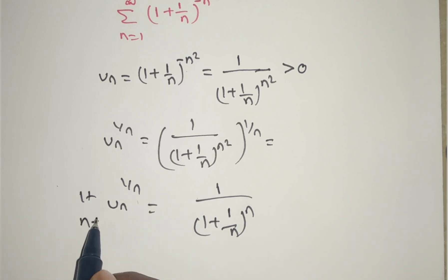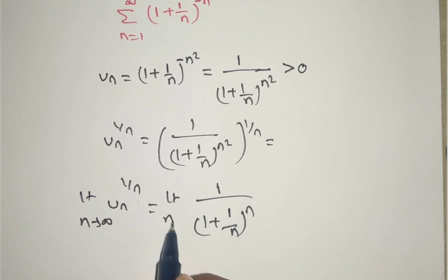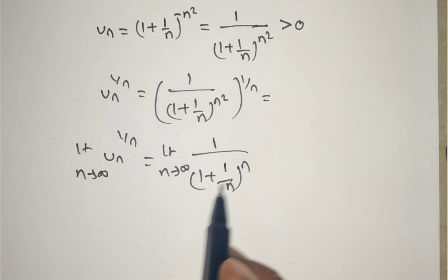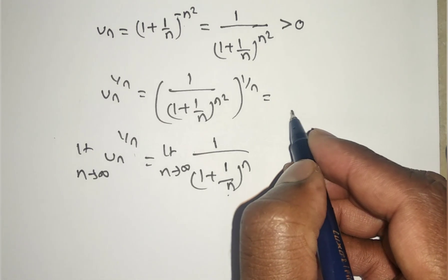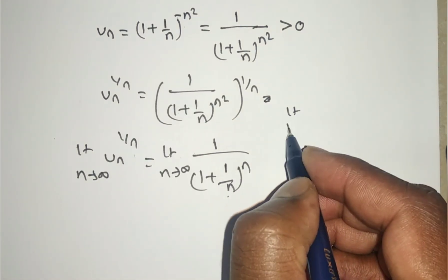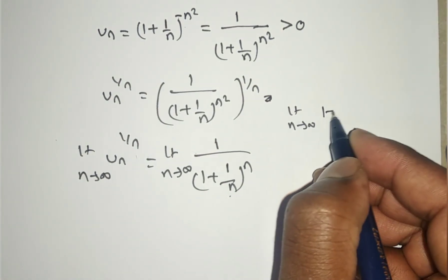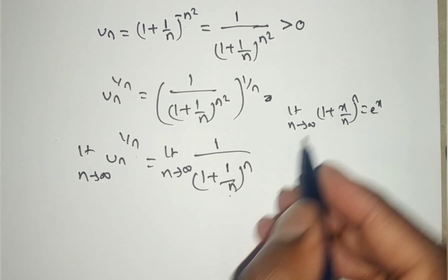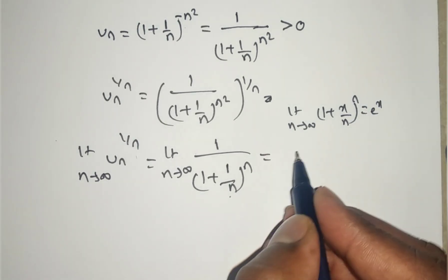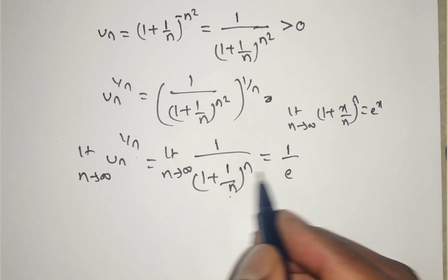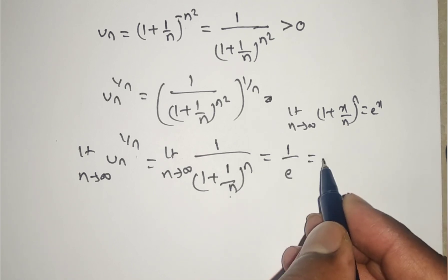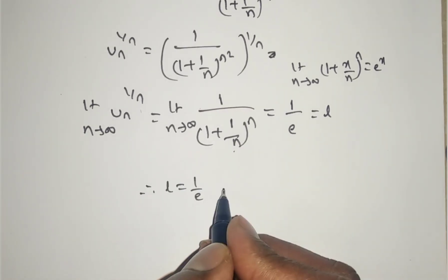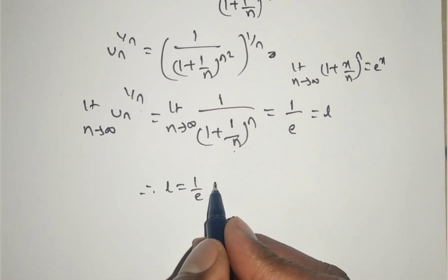Taking the limit as n tends to infinity on both sides, we get limit n→∞ of 1/(1 + 1/n)^n. Using the known formula: limit n→∞ of (1 + x/n)^n = eˣ, this becomes 1/e^1 = 1/e. So l = 1/e, which is less than 1.